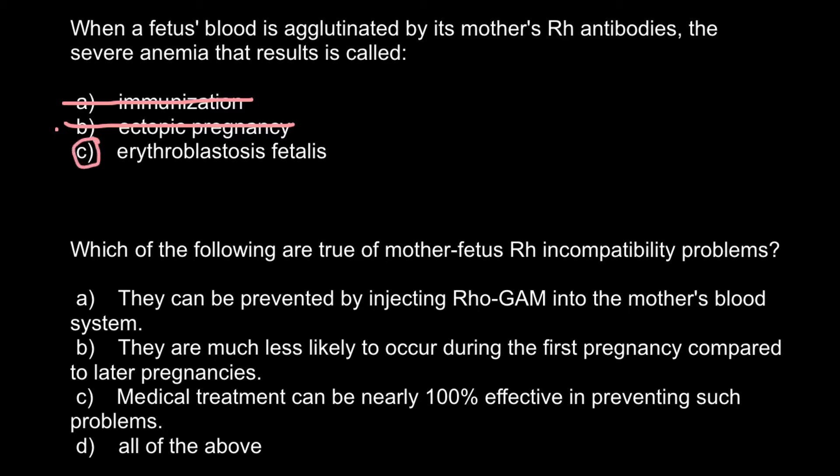The next question: Which of the following are true of mother-fetus RH incompatibility problems? Answer A: They can be prevented by injecting RhoGAM into the mother's blood system. Answer B: They are much less likely to occur during the first pregnancy compared to later pregnancies. Answer C: Medical treatment can be nearly 100% effective in preventing such problems. Answer D: All of the above.